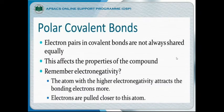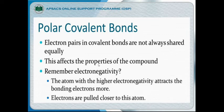What is a polar covalent bond? There is some difference in the sharing of electrons — electron pairs in covalent bonds are not always shared equally. Recall electronegativity, which is the property of attraction of shared paired electrons towards an atom in a compound. The atom with the higher electronegativity attracts the bonding electrons more, so electrons are pulled closer to that atom.